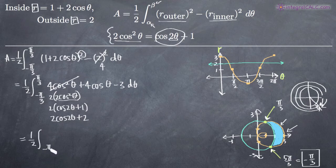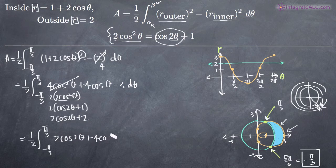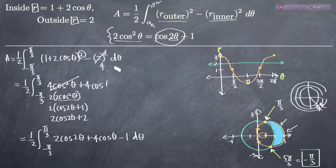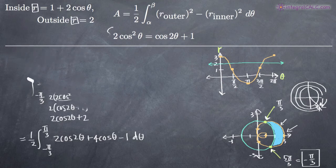Combining that with the other terms in the integral, from negative pi over 3 to pi over 3 we now have 2 cos of 2 theta plus 4 cosine theta plus 2 minus 3, which gives us 2 cos of 2 theta plus 4 cosine theta minus 1, d theta. Now we no longer have the cos squared term, which makes integration much easier.